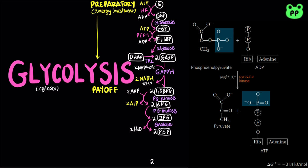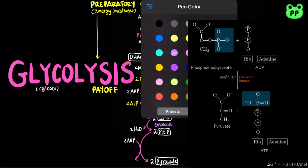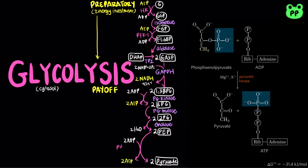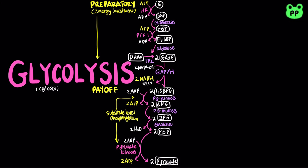The last step of glycolysis involves another substrate-level phosphorylation, in which pyruvate kinase — named for the reverse reaction — catalyzes the transfer of a phosphoryl group from phosphoenolpyruvate to ADP, producing pyruvate and ATP. During the energy payoff phase of glycolysis, 2 glyceraldehyde-3-phosphates are converted to 2 pyruvates, producing 2 NADH and 4 ATP molecules.